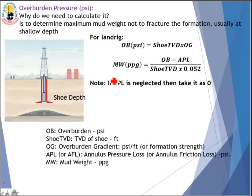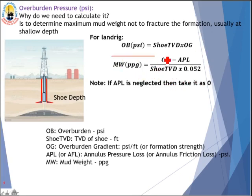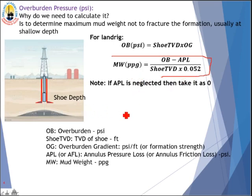For a land rig, which is much easier — you don't have water depth or air gap. Just take shoe TVD × overburden gradient to get the overburden in psi, then use the same formula as before: maximum mud weight = (OB − APL) ÷ (shoe TVD × 0.052). If APL is neglected or not mentioned, take it as zero and work out the mud weight that will not fracture the shoe depth.